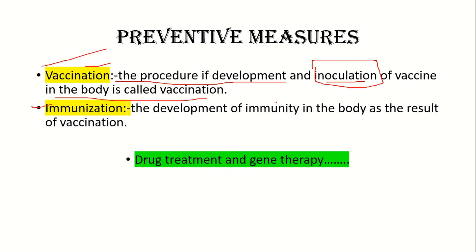The second thing is immunization — the development of immunity in the body as a result of vaccination. Your immune system is strengthened by what is injected into your body, and this process is called immunization.